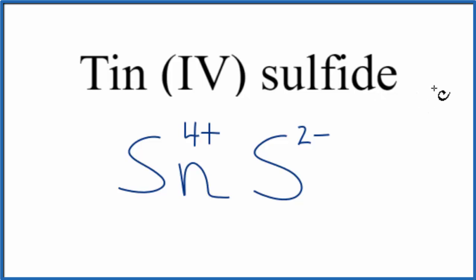Tin four sulfide, that's a neutral compound, it doesn't say ion after it. So because we need these to add up, we're going to need two sulfur atoms. 2 times 2 minus, that's minus 4, that'll balance the charge on the tin 4 ion here.